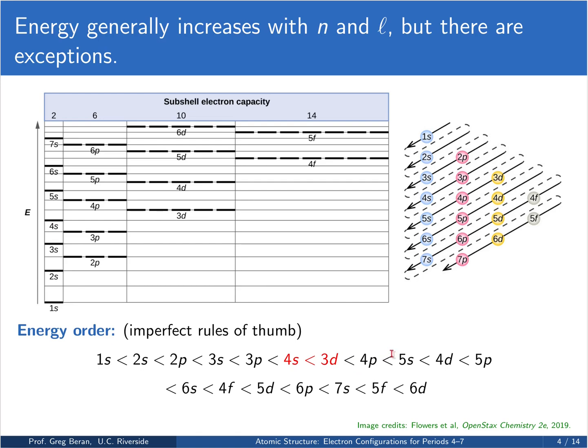The same holds true for the 5s and 4d orbitals. And when we get even further on and f orbitals become involved, it gets even more complicated. The 6s is below the 4f, which is below the 5d. And the same holds true in the next period. The 7s is below the 5f, which is below the 6d. You can see all of these in this energy diagram here.